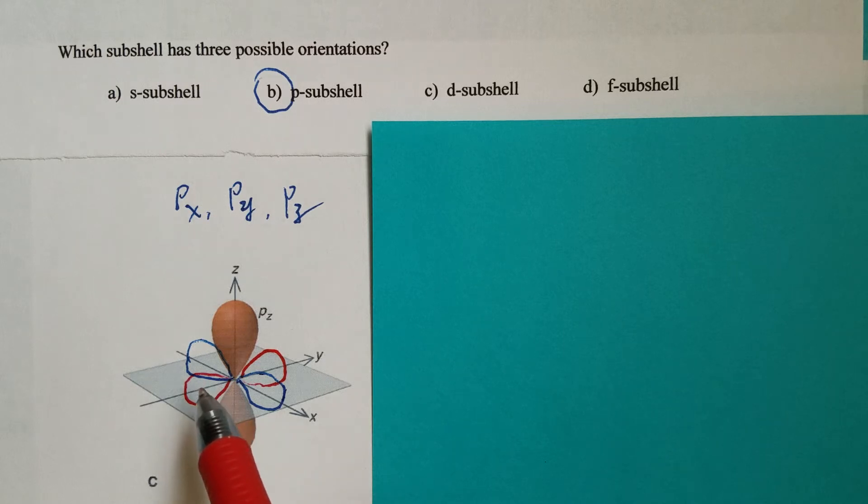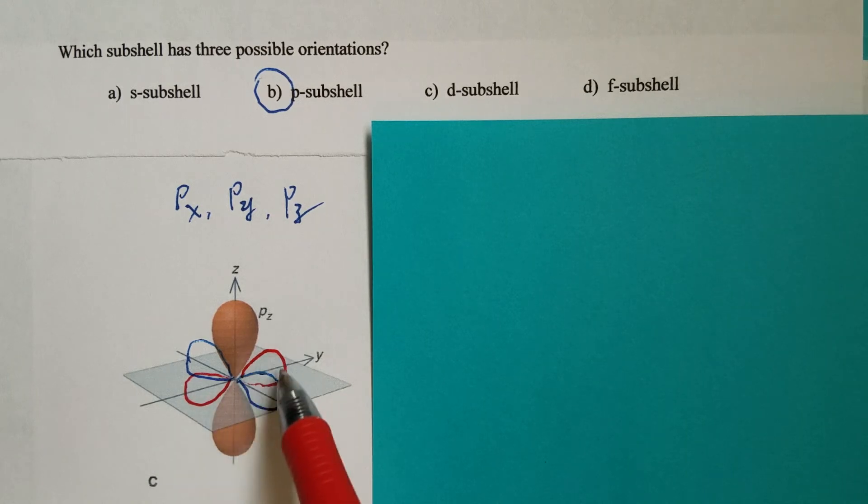So Py, the electron density should look like this, along the y-axis. So we have now Px, the blue one, Py, the yellow or red one, and then Pz, the orange one.